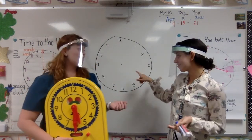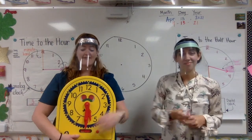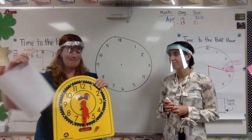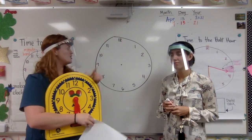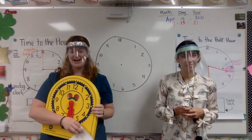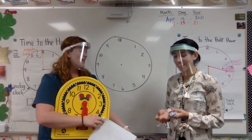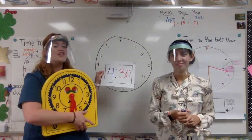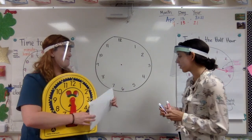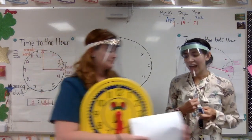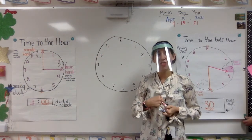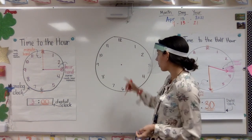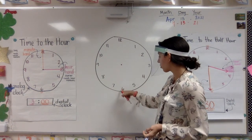So we just practiced looking at an analog clock and figuring out what time it is. Today, to accomplish our target of telling time to the half hour, we're going to look at a digital time and see if we can build it on the clock and draw the hands. You ready, Ms. Lustico? Our first time is 4:30. Right away, I know that my minutes are 30 minutes, so my minute hand needs to be pointing down towards the six.